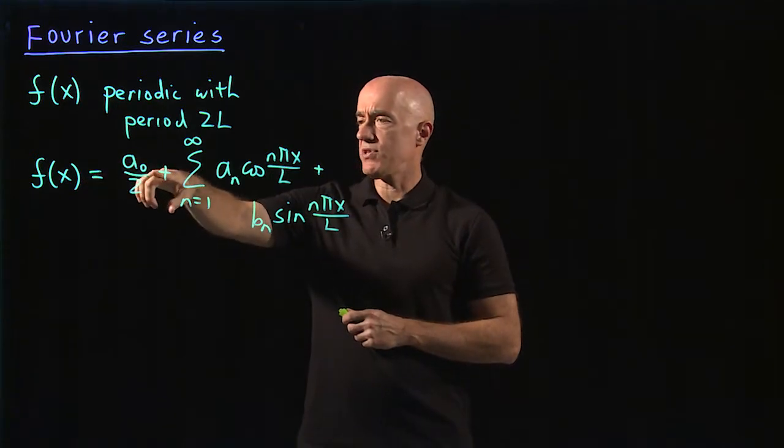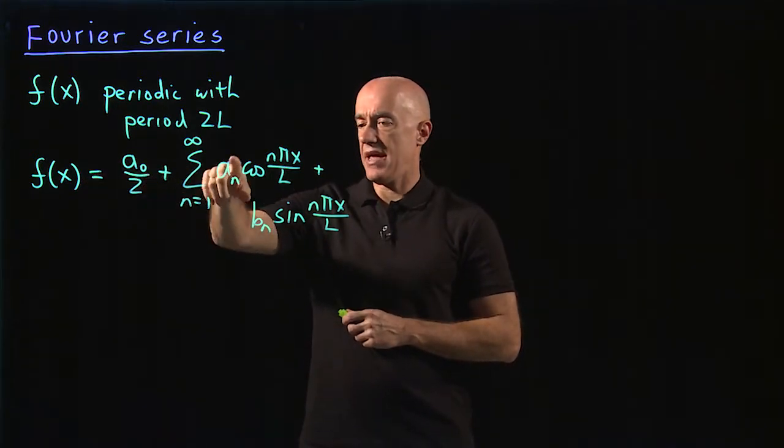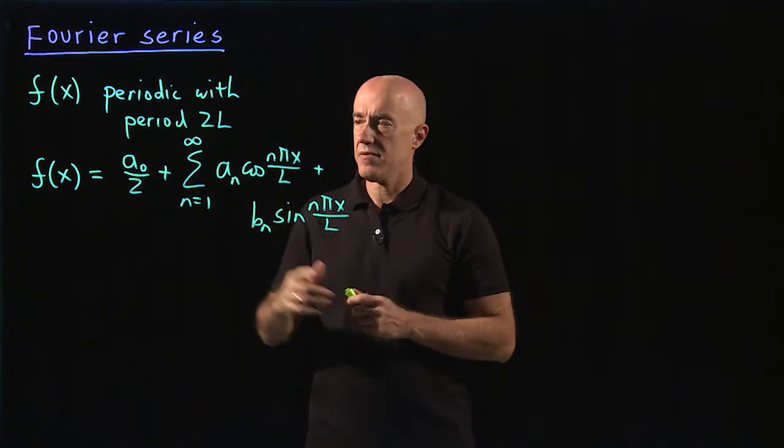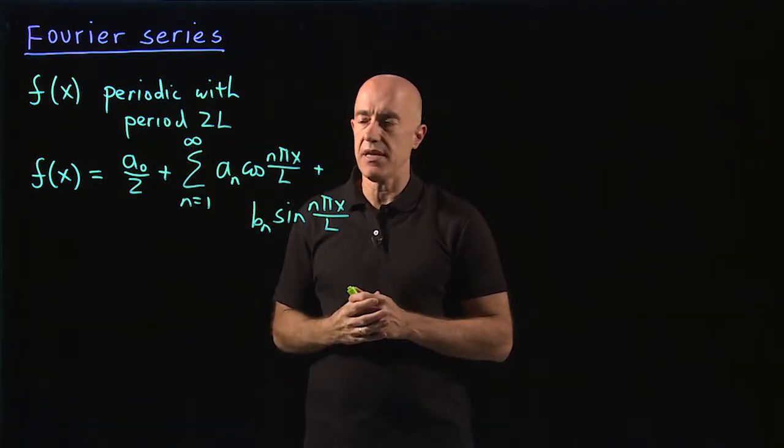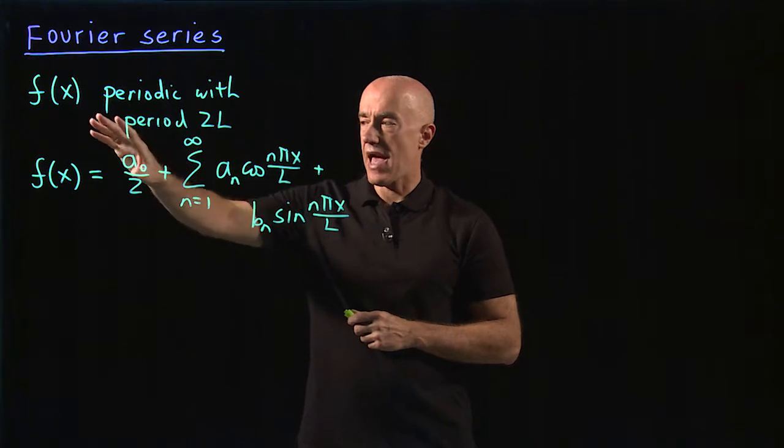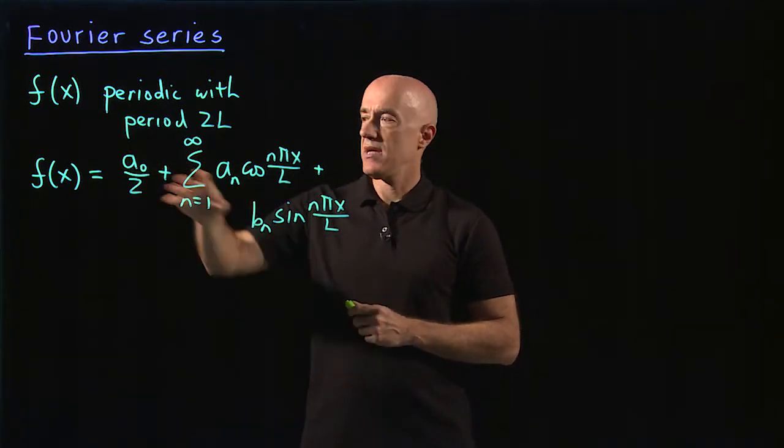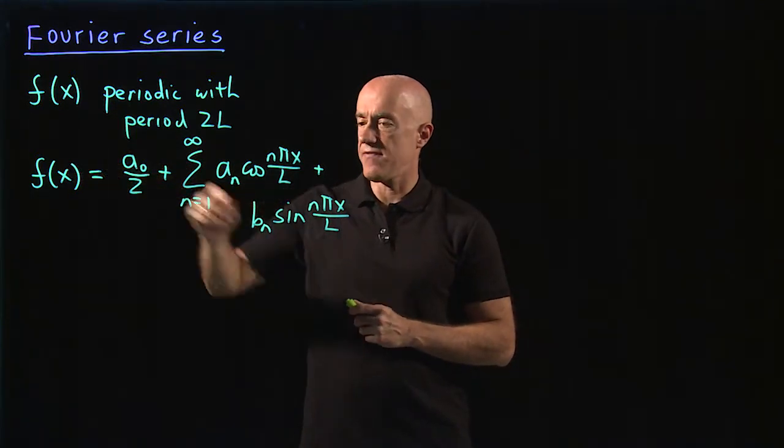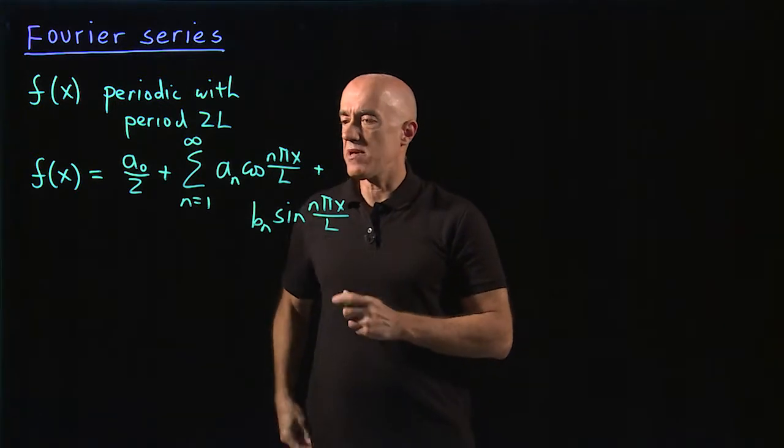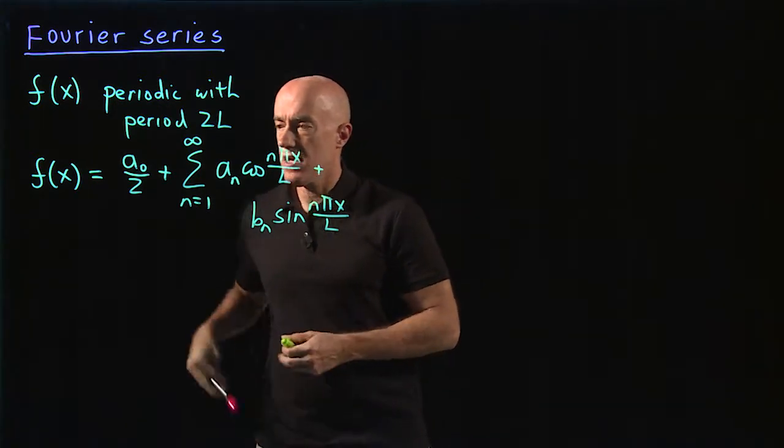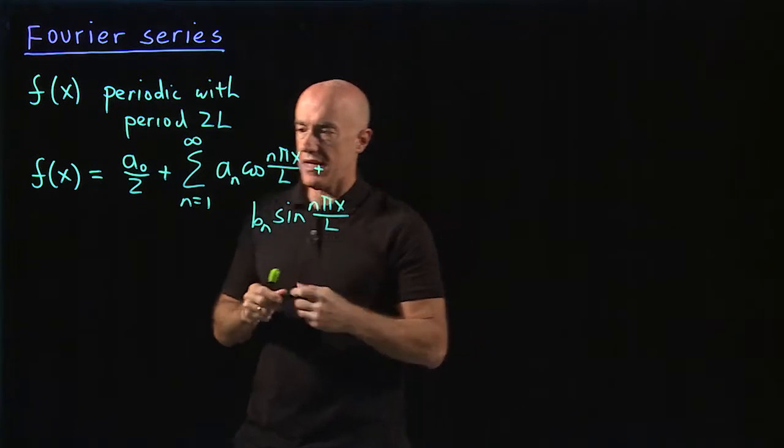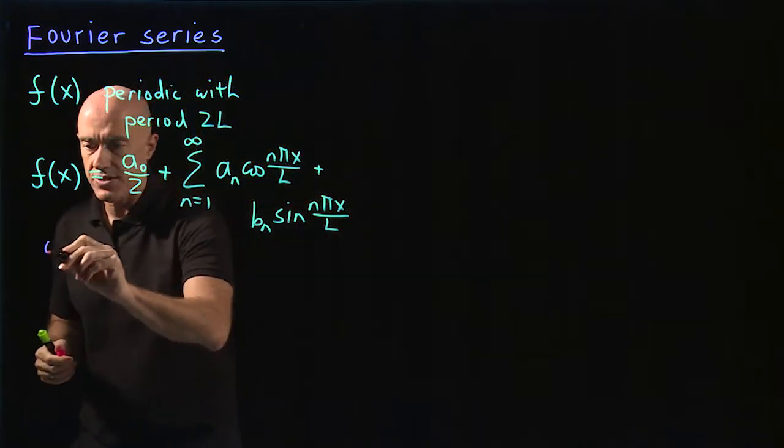These coefficients a naught, a n, and b n, for n equals 1 to infinity, have to be determined in terms of this function f of x. To determine them, we use some relations that are called orthogonality relations.